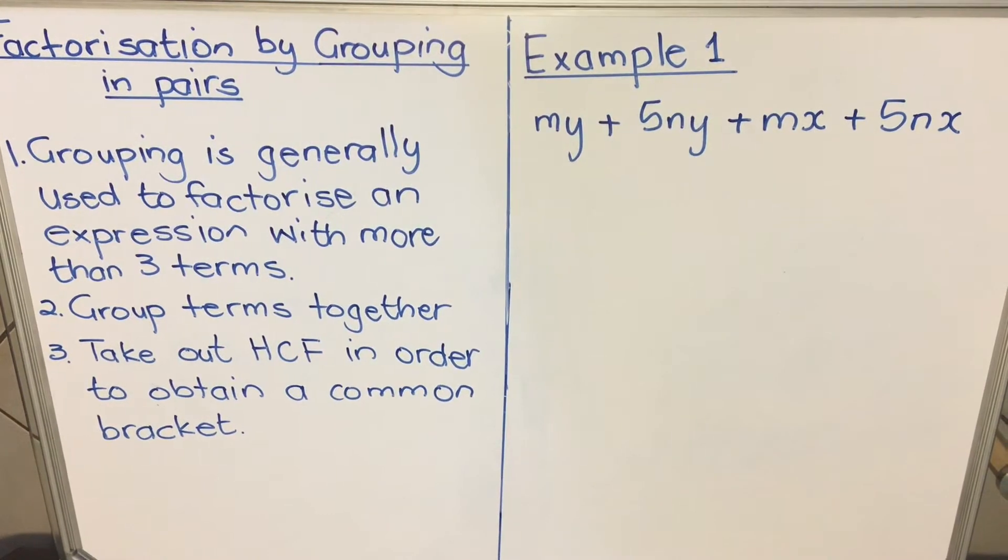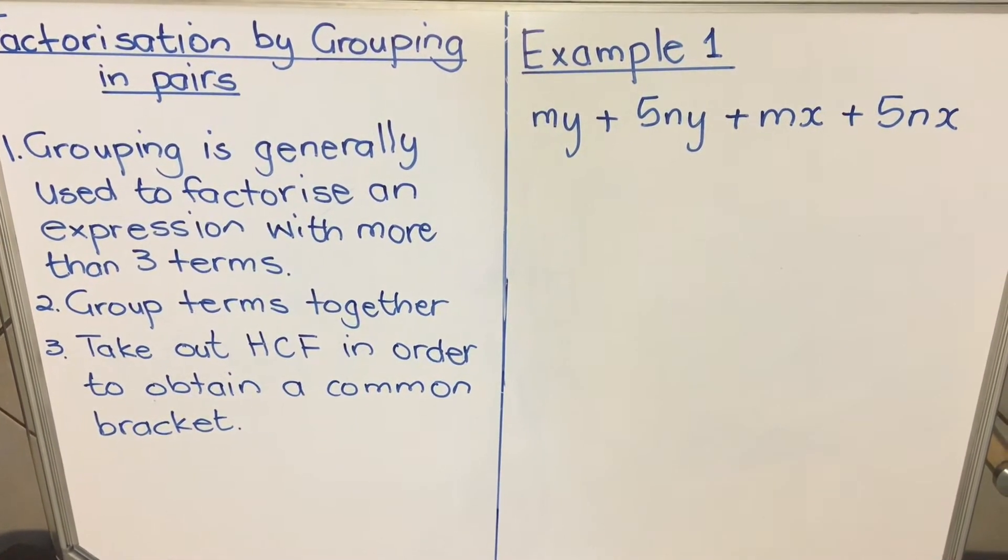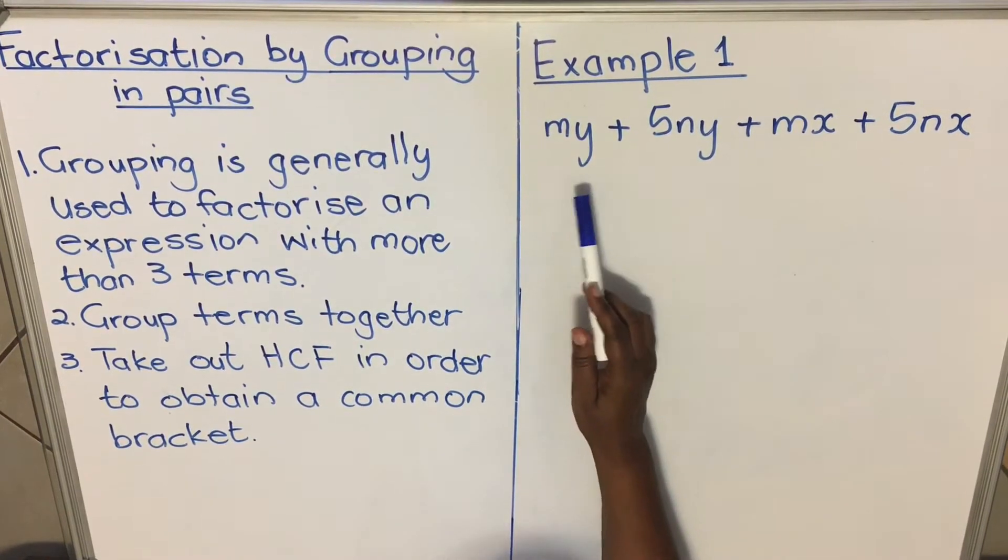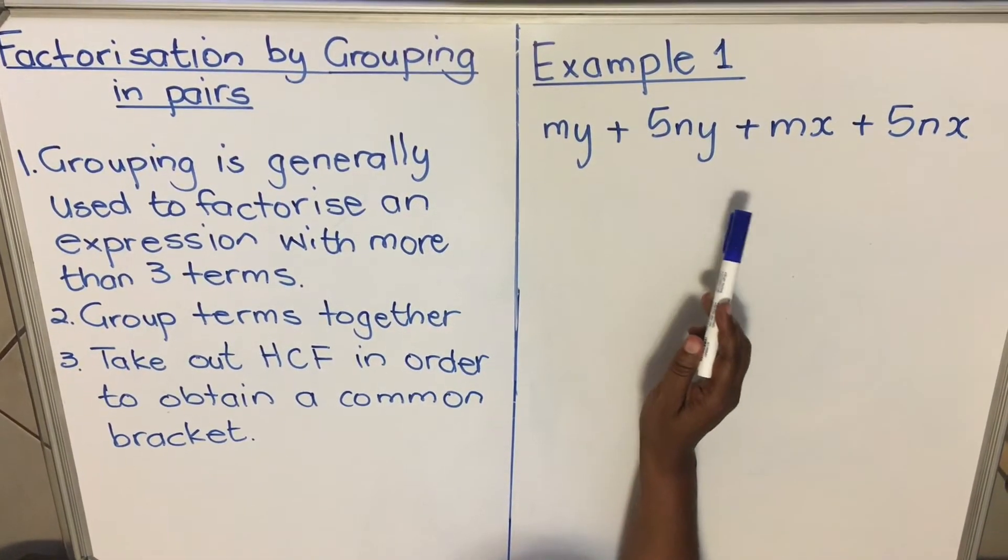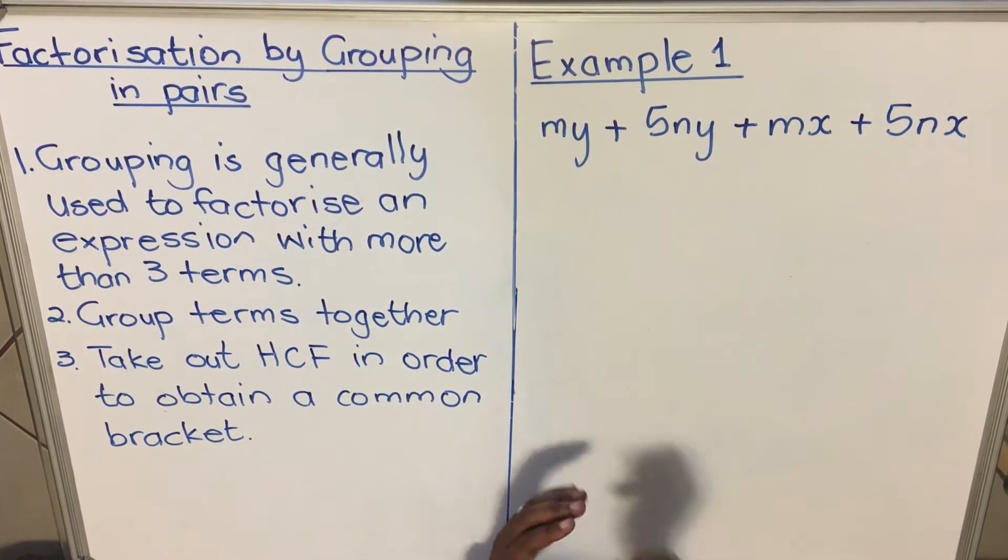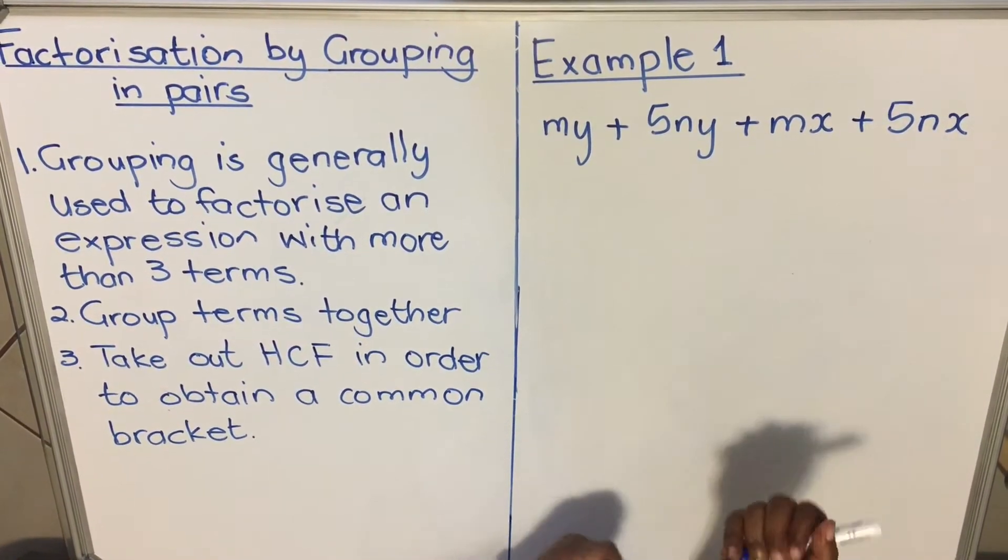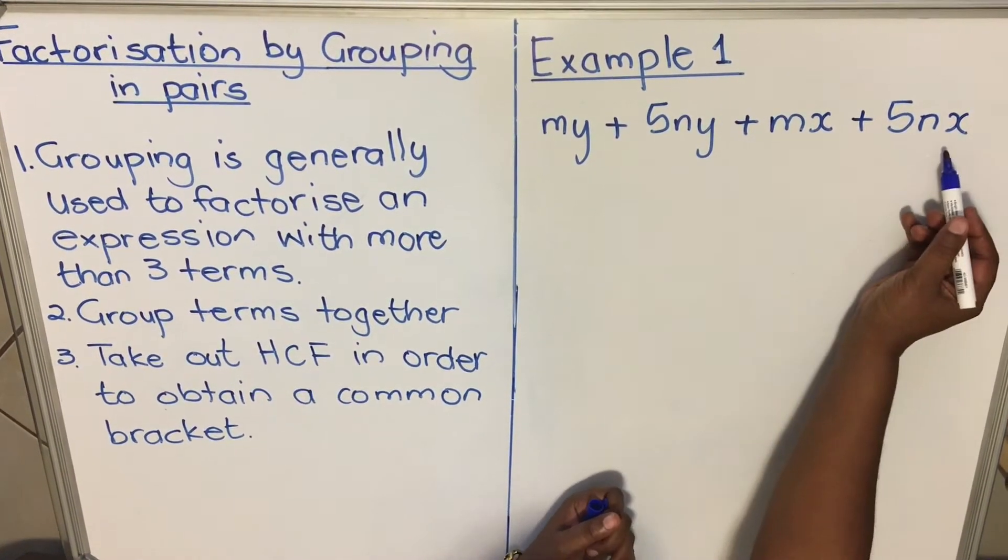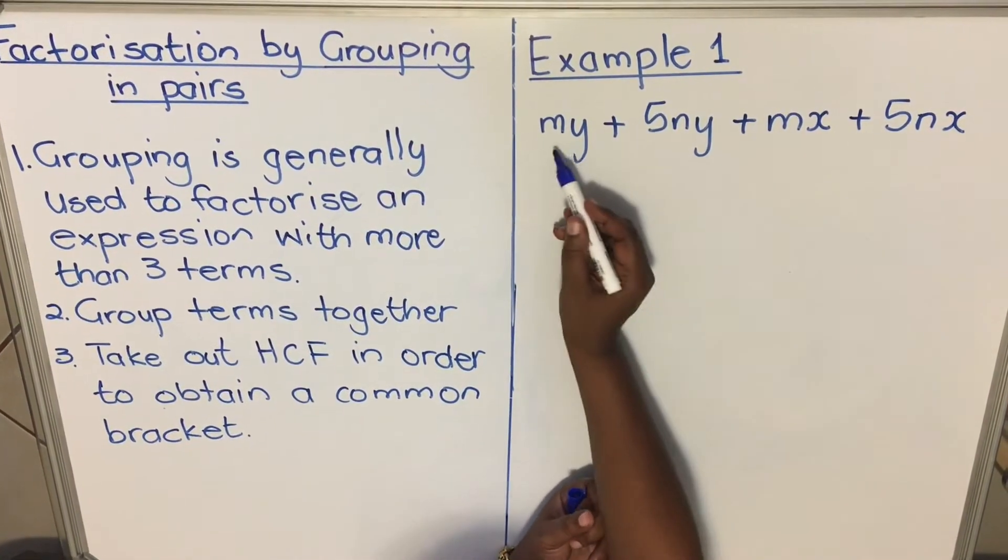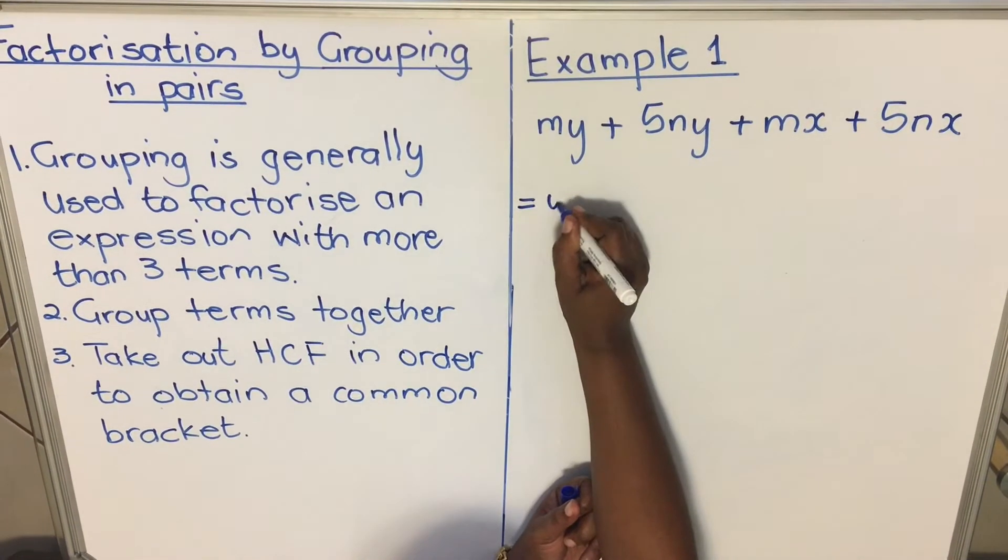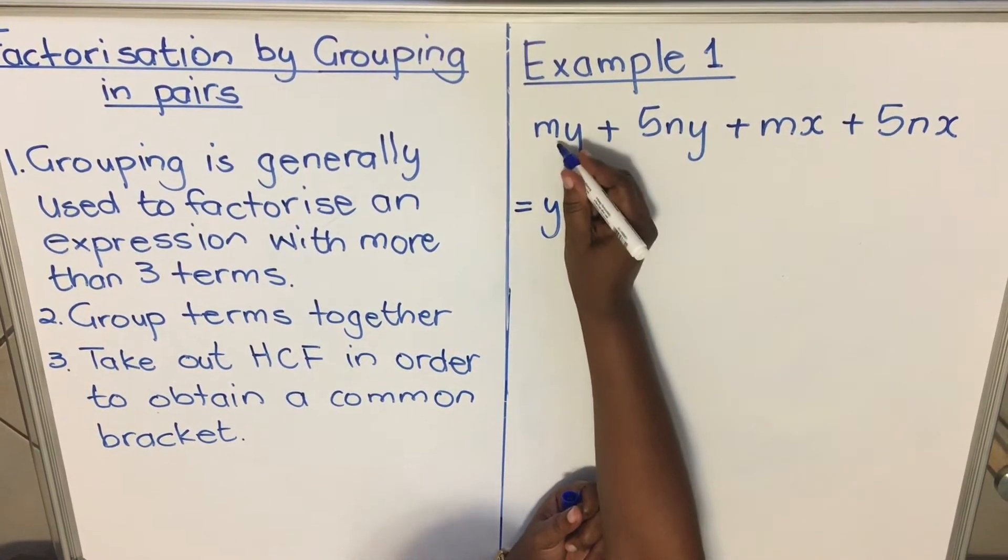Let's look at two examples. Here's the first example: my + 6ny + mx + 5nx. We're going to group them - the first two we put in one group and the next two in another group. Then we'll take out a common factor. Our common factor is y, so what we'll be left with here is m + 5n.